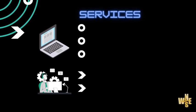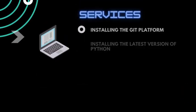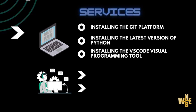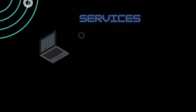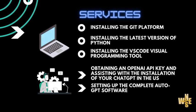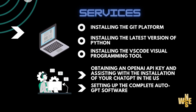We offer the following 5 comprehensive services: installing the Git platform, installing the latest version of Python, installing the VS Code visual programming tool, obtaining an OpenAI API key and assisting with the installation of your ChatGPT in the US, and setting up the complete AutoGPT software.